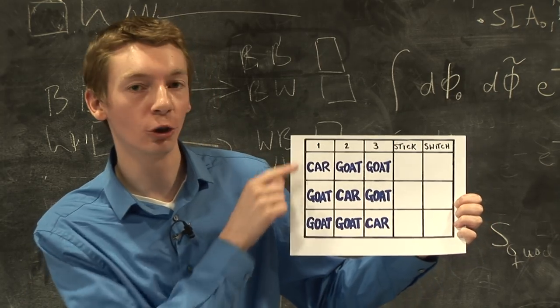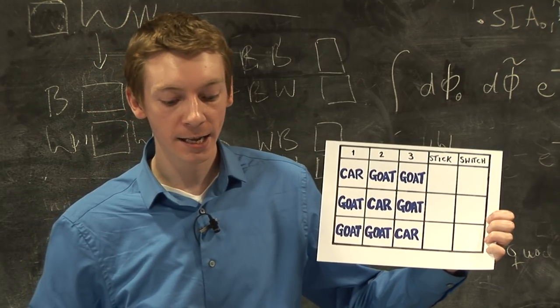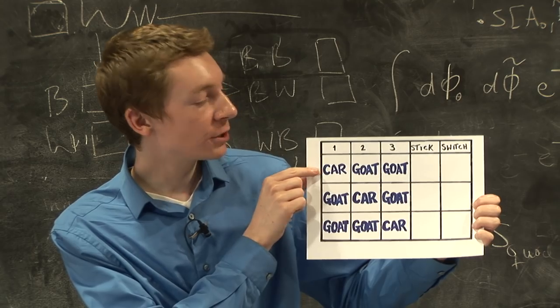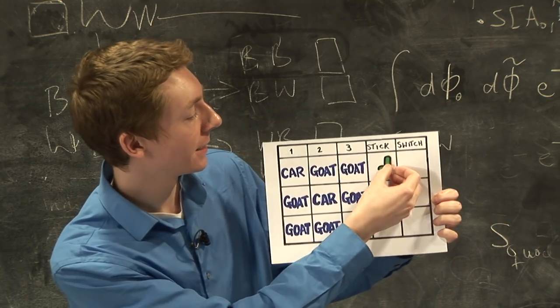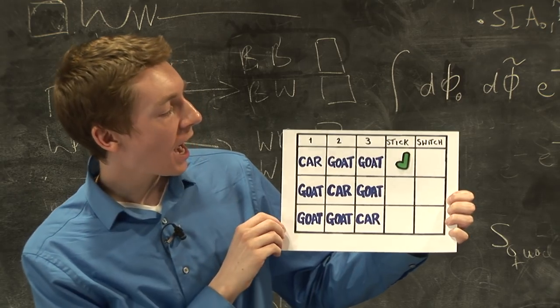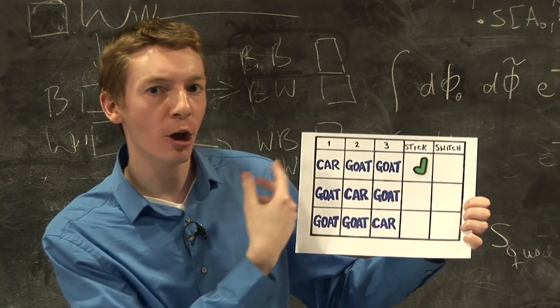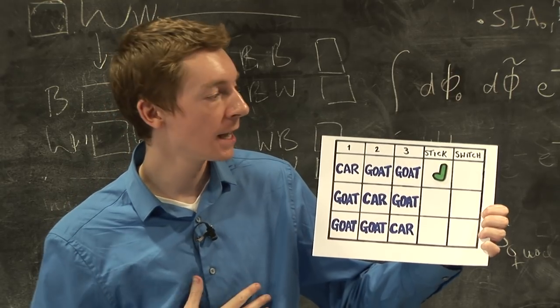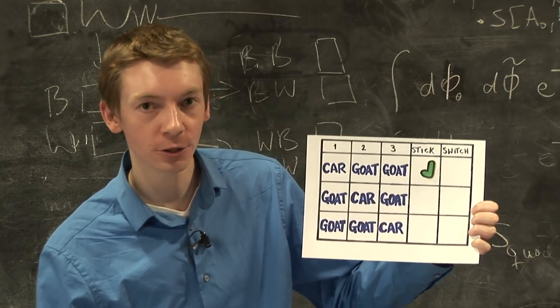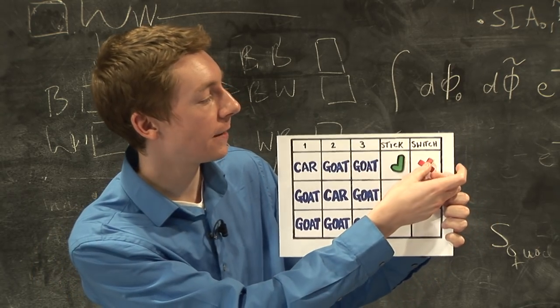So let's say you pick door number 1. And in the first case, if you stick with door number 1, you're going to win. So let's put a tick next to that. And Monty Hall, he's going to open, say, door number 3 or door number 2 to reveal the booby prize. And if you switch and change your mind, you're going to lose. So we'll put an X there.